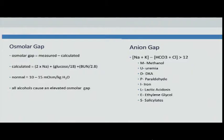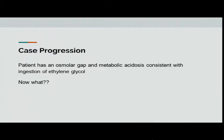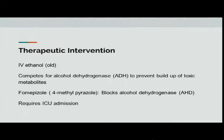The osmolar gap is calculated as: 2 × sodium + glucose/18 + BUN/2.8. Normal is 10 to 15. All alcohols can cause an elevated osmolar gap. The anion gap mnemonic includes methanol and ethylene glycol in the 'MUDPILES' list. This patient has osmolar gap and metabolic acidosis consistent with ethylene glycol ingestion. The old treatment was IV ethanol, which competes for ADH to prevent buildup of toxic metabolites. The current treatment is fomepizole, which blocks ADH. The patient will usually require ICU admission.